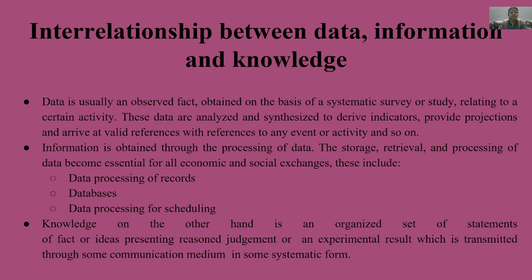Information कैसे निकलती है — information is obtained through the processing of data. यानि कि जब आप आंकड़ों का processing करते हैं तो सूचना प्राप्त होती है। The storage, retrieval and processing of data become essential for all economic and social exchanges. इसमें data processing of records, databases और data processing for scheduling शामिल है।